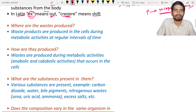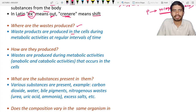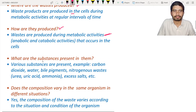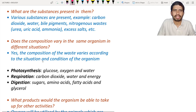Waste is produced in the cells during metabolic activities and must be removed at regular intervals. They are produced during the sum of anabolic and catabolic activities. The substances present in waste include carbon dioxide, water, bile pigments, nitrogenous waste such as urea, uric acid, ammonia, and so on — all of which must be removed from the body.